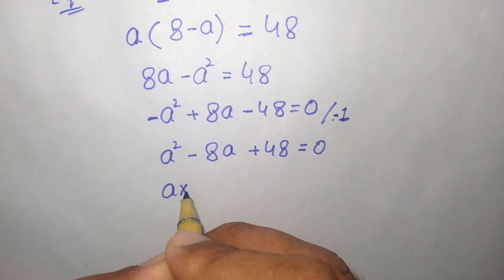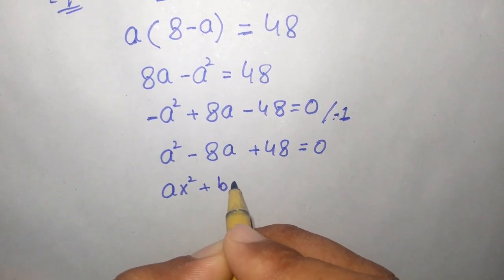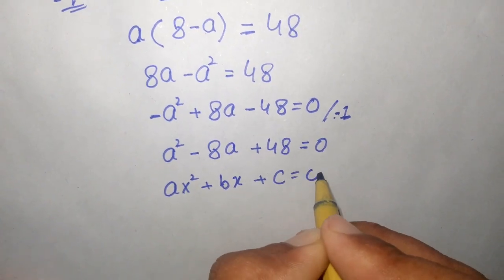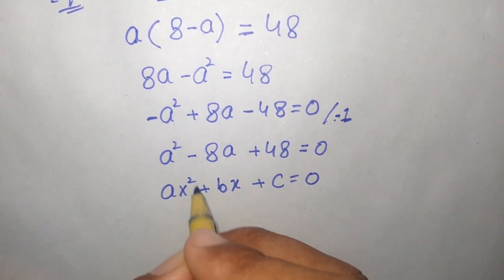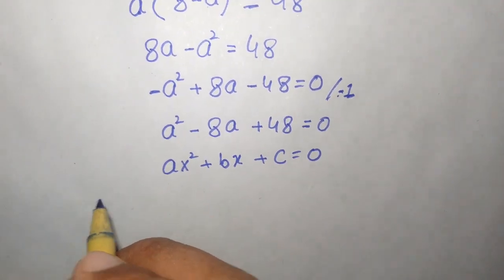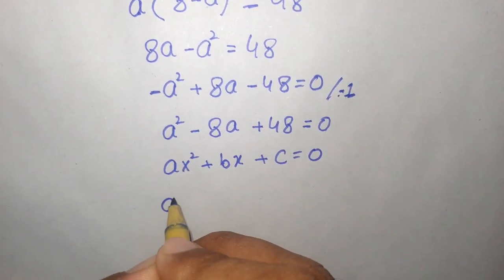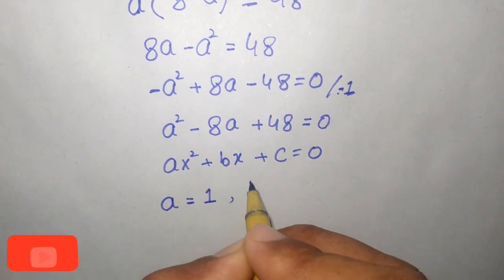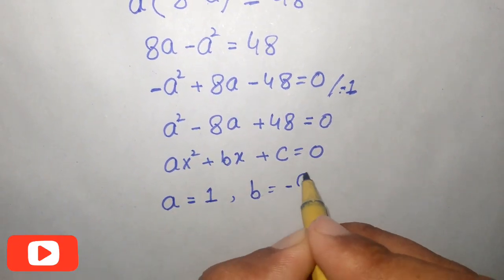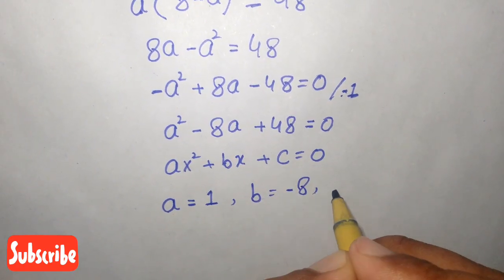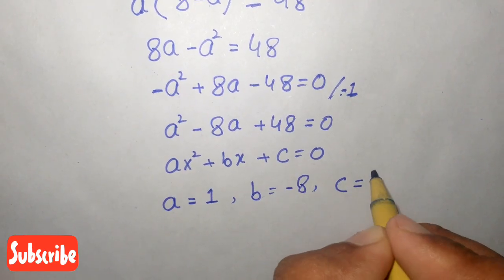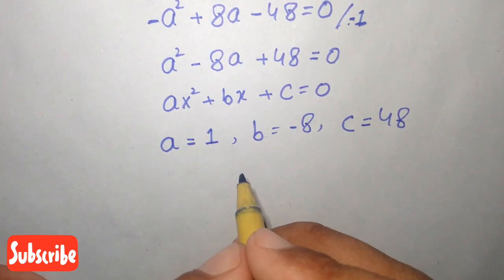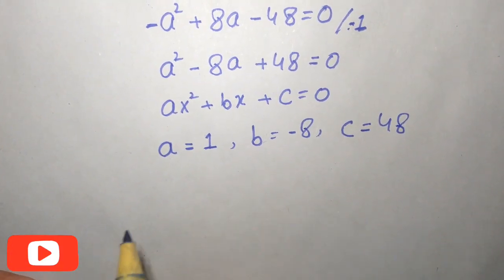Now we solve this using the quadratic equation. We compare a squared minus 8a plus 48 equals 0 with the standard quadratic form ax squared plus bx plus c equals 0. So here capital A is equal to 1, capital B is equal to minus 8, and capital C is equal to 48.